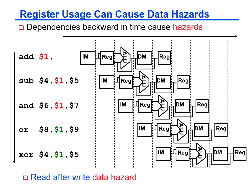Here is a graphical depiction of how the read after write dependency causes a data hazard. The result of the first add instruction is not available until it reaches the writeback stage, which means the two instructions following it use the wrong value of register $1 read from the register file. The OR instruction gets the correct value because the register write happens before the register read in the same clock cycle.